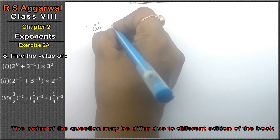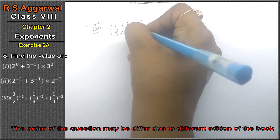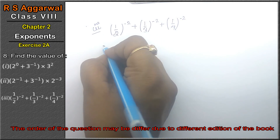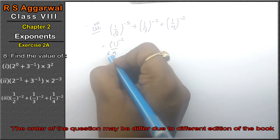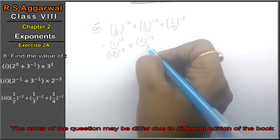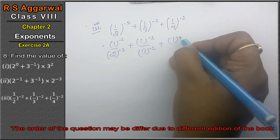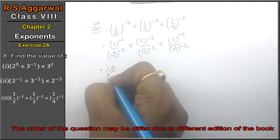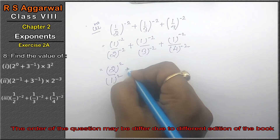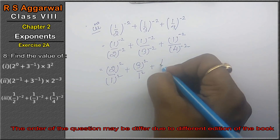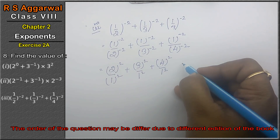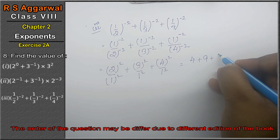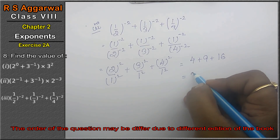Let's do third part. Third part is 1 upon 2 ki power minus 2 plus 1 upon 3 ki power minus 2 plus 1 upon 4 ki power minus 2. Right friends? 1 ki power minus 2 ka matlab 1 hi hai. Toh 2 squared is 4, plus 3 squared is 9, plus 4 squared is 16. Toh answer: 16 plus 4 is 20, 20 plus 9 is 29. 29 is the answer.